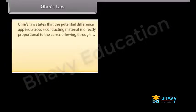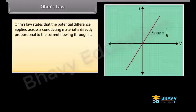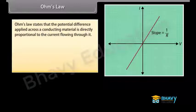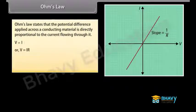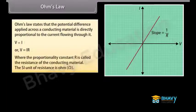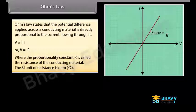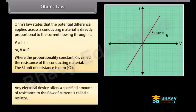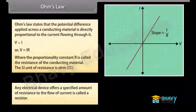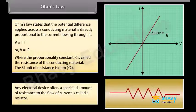Ohm's Law states that the potential difference applied across a conducting material is directly proportional to the current flowing through it: V is directly proportional to I, or V equals IR, where the proportionality constant R is called the resistance of the conducting material. The SI unit of resistance is ohm. Any electrical device that offers a specified amount of resistance to the flow of current is called a resistor.